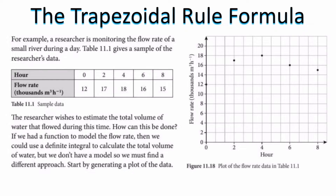In this video, we're going to talk about the trapezoidal rule formula. If you already watched the videos on integration, how to find the antiderivative, and how to find the definite integral, then you know that the definite integral gives us the exact area under a curve. There are situations where you won't have the antiderivative or you'll have data values that don't have a function assigned. If we don't have an equation to find a definite integral for, how do we figure out the area under the curve? The trapezoidal rule is going to allow us to do that.